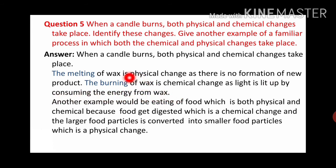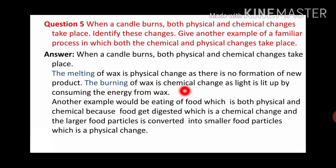When wax melts, it is a physical change because no new formation occurs - no new product. But when we burn wax, that is a chemical change, because light is produced from it. The light comes from energy consumed from within the wax. Melting is a physical change because the melted wax can be reheated and formed into another shape. Another example would be eating of food, which involves both physical and chemical changes - food gets digested, which is a chemical change, and larger food particles are converted into smaller food particles, which is a physical change.